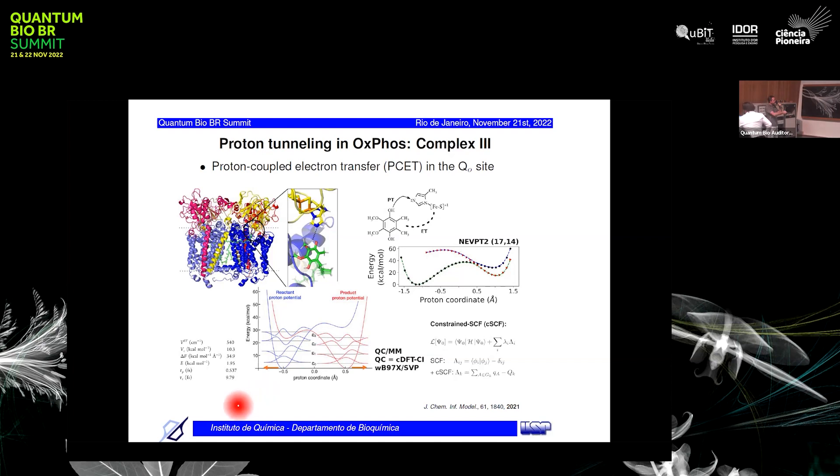It's interesting that we can estimate the tunneling times, the tunneling times for the electron and for the proton, because there are two processes going on here. The tunneling time for the proton is more than ten times faster than the tunneling time for the electron. It's an important quality or property of this reaction.